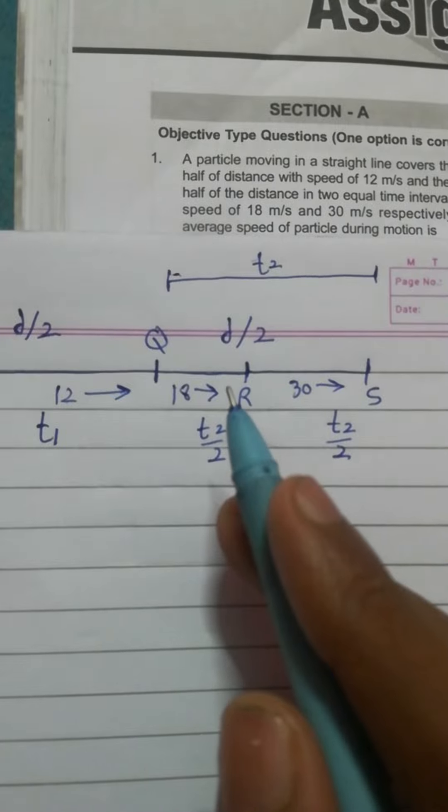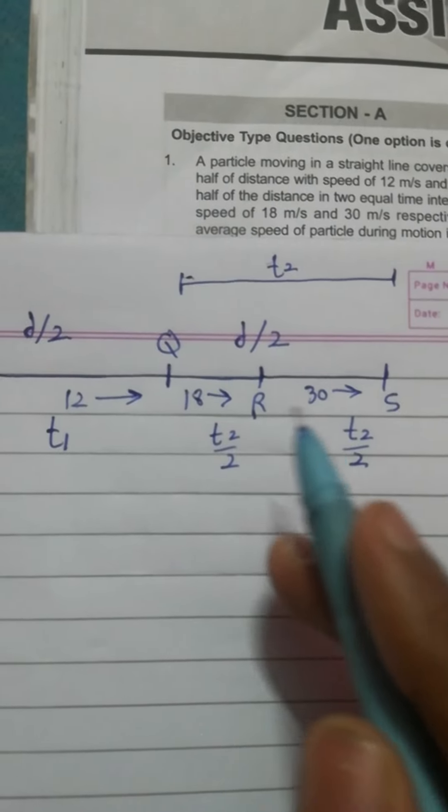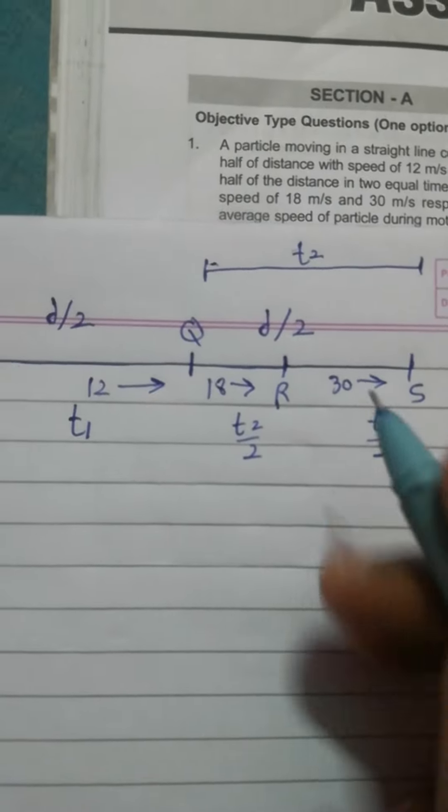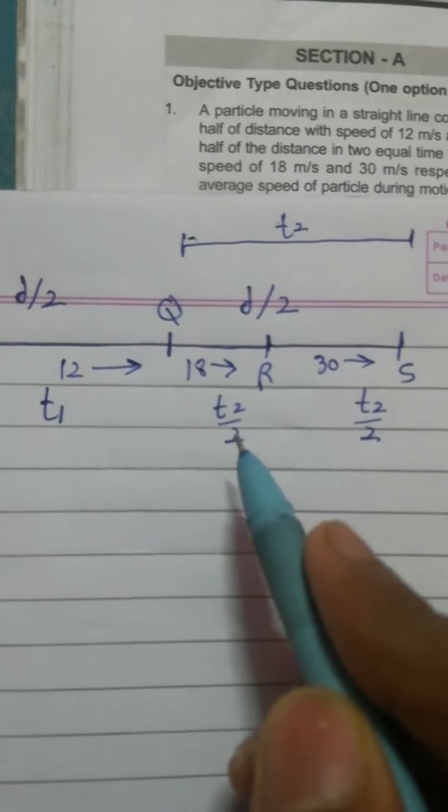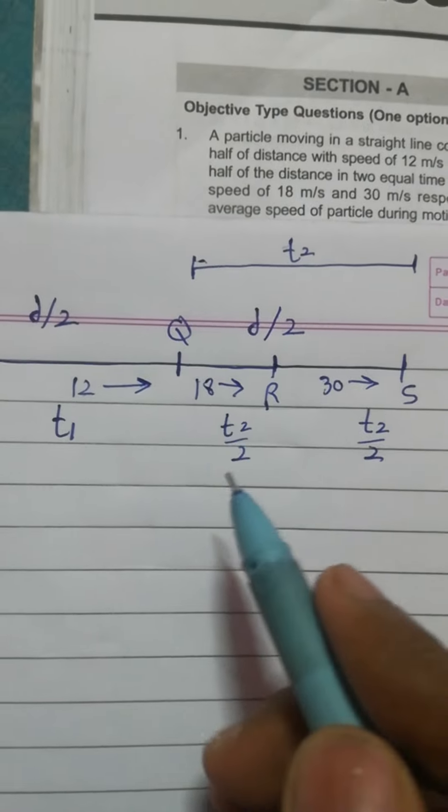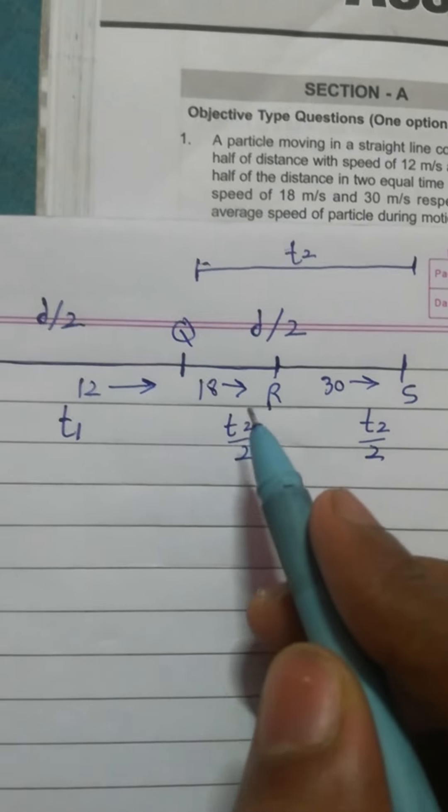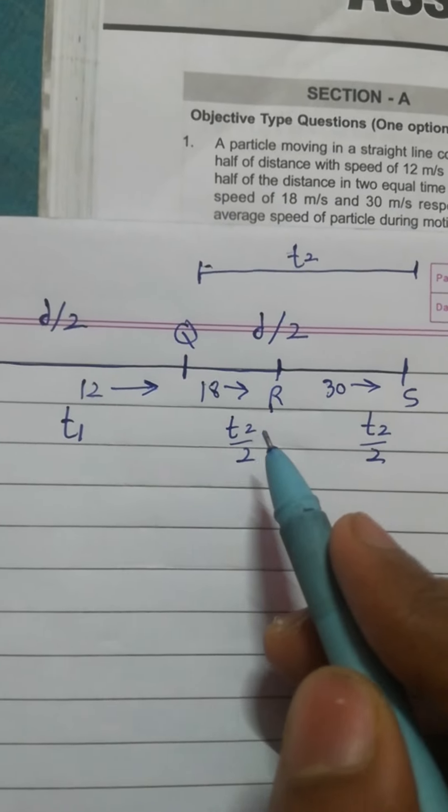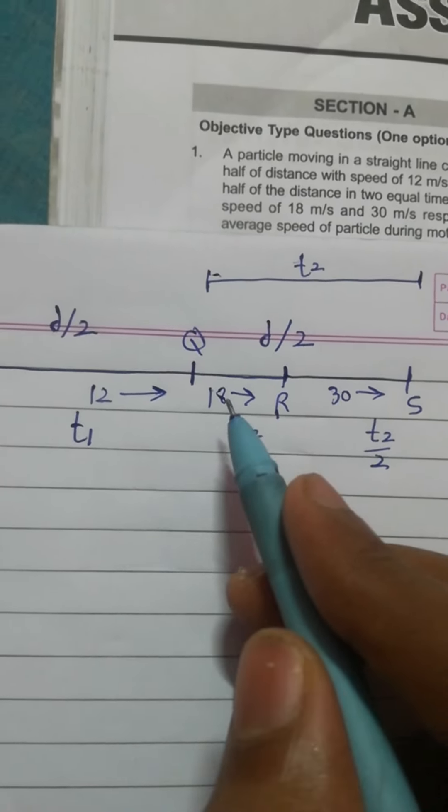Because if speed is 18, you can compare it that the total time T2 would be 6 seconds. So here in 3 seconds it will move 54.